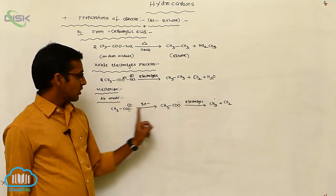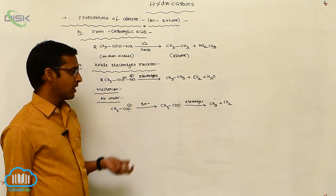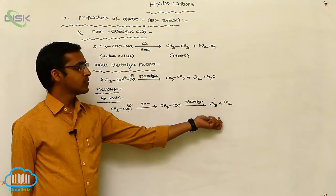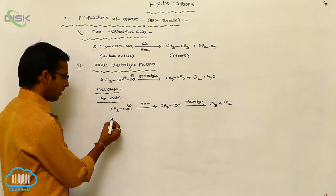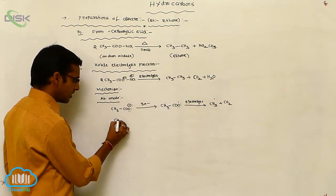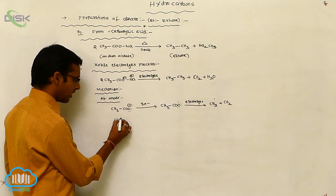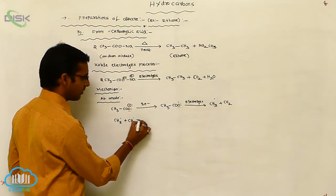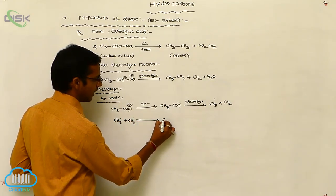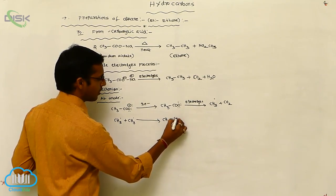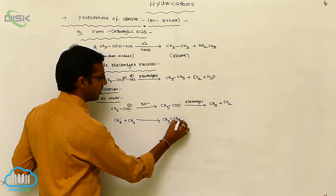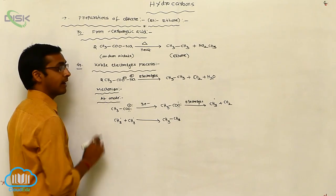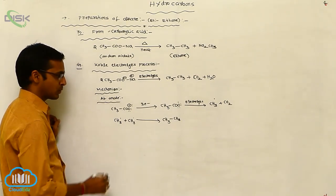This represents one mole. Considering another mole, it gives another mole of CH₃ radical. So the CH₃ radical reacts with another CH₃ radical to give ethane (CH₃–CH₃). This ethane is formed at the anode electrode.